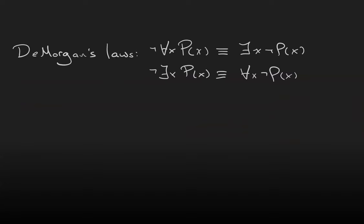We also have DeMorgan's laws for quantifiers. If we negate a universal statement, we get an existential statement. And if we negate an existential statement, we get a universal statement.